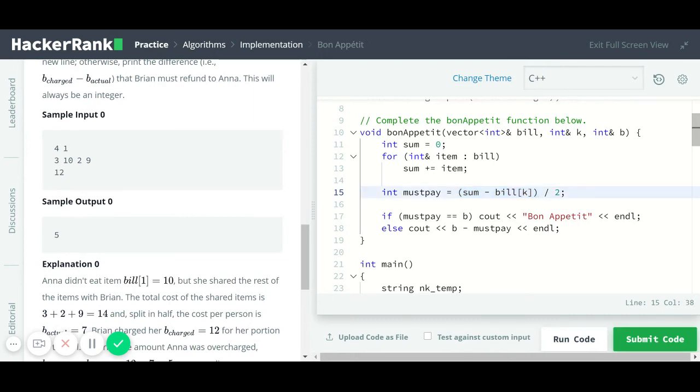So that is what Anna needs to pay. If whatever I got here, that value, which is what Anna needs to pay, if that value is equal to the value of b, which is the amount that she's asked to pay by Brian, then I will just print out the string Bon Appetit.